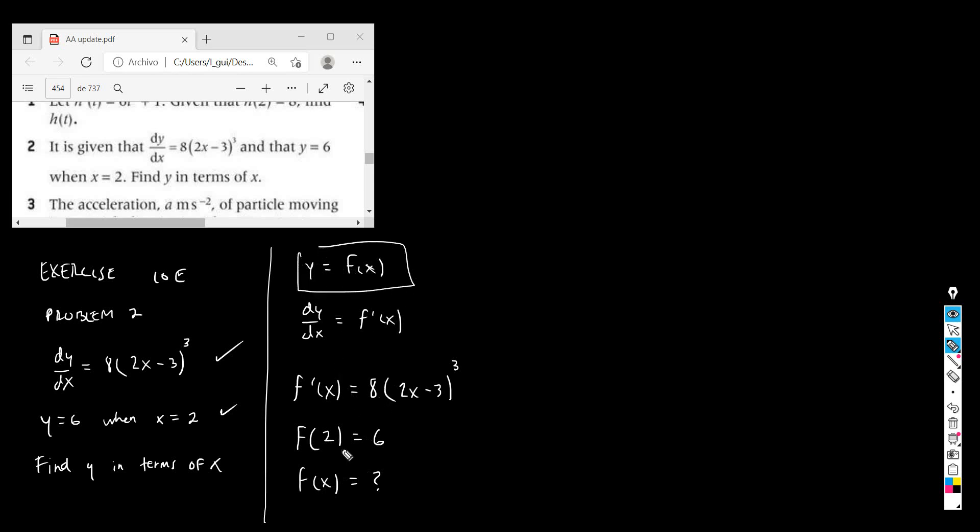Now you can see that it's basically the same problem as before, as the first one. So if you know the derivative of the function f and you want to get the function f, then you need to anti-differentiate. Let's proceed.